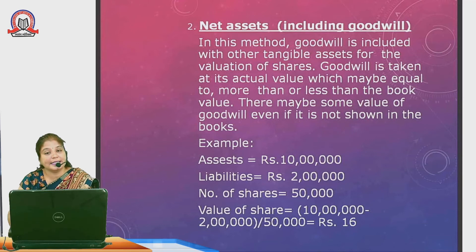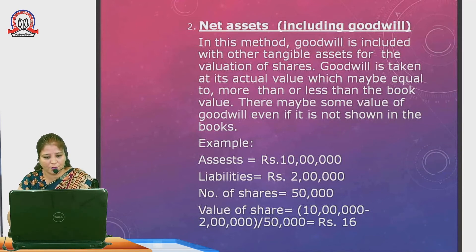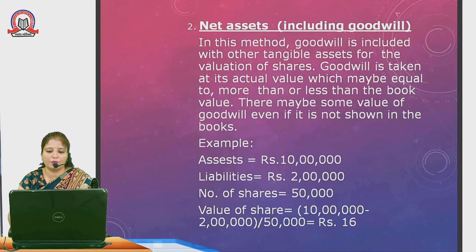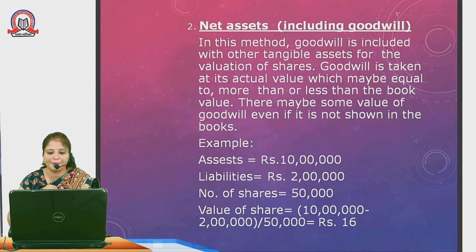Under the net asset method including goodwill, goodwill is included with other tangible assets for the valuation of shares. Goodwill is taken at actual value, which may be more or less than the book value. There may be some value of goodwill even if it is not shown in the books — meaning we must first calculate goodwill before calculating the value of shares.